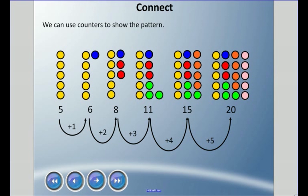We can use something called counters to show the pattern. And so the yellow circles are what we started with. We started at five and we add one each time. And so we added a blue one. And then we added two red ones. We added three green, four orange, and five pink. So we're using counters to show, so an object to show the pattern.